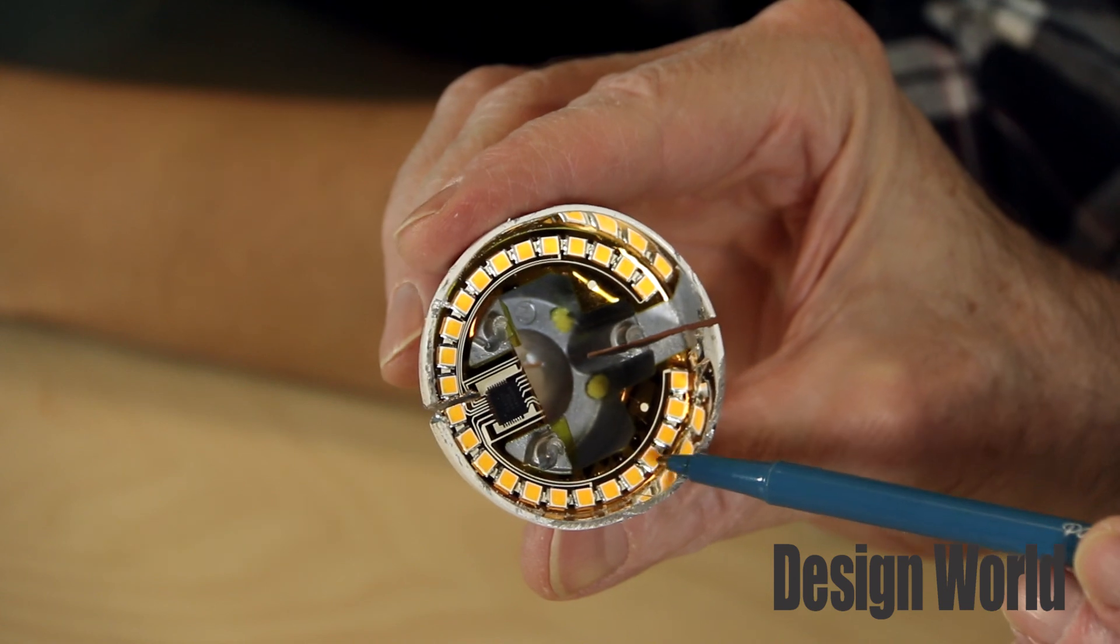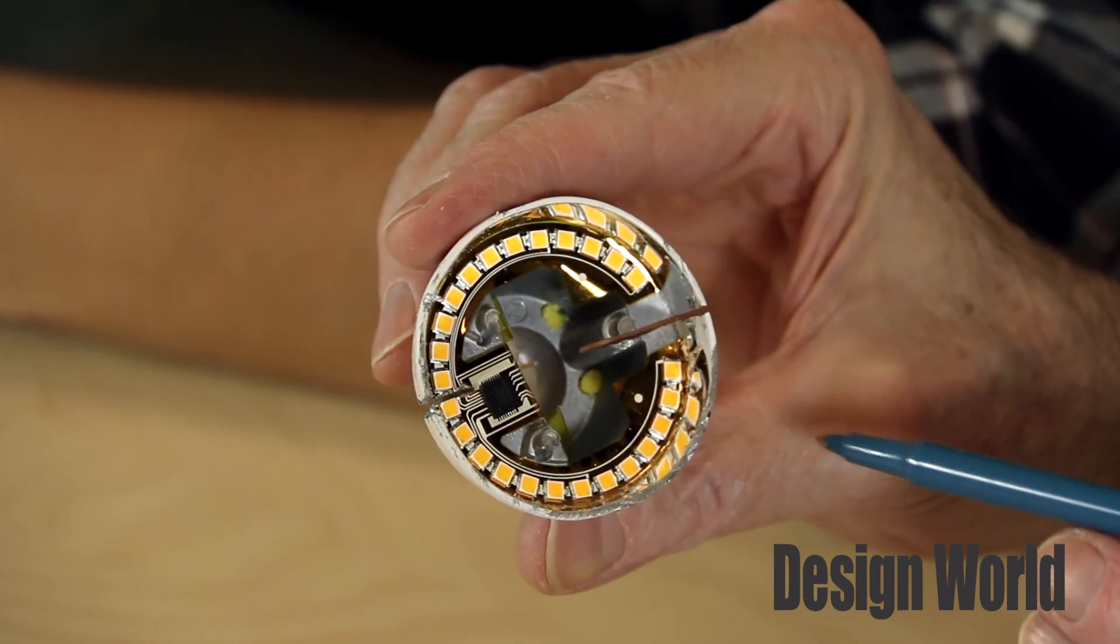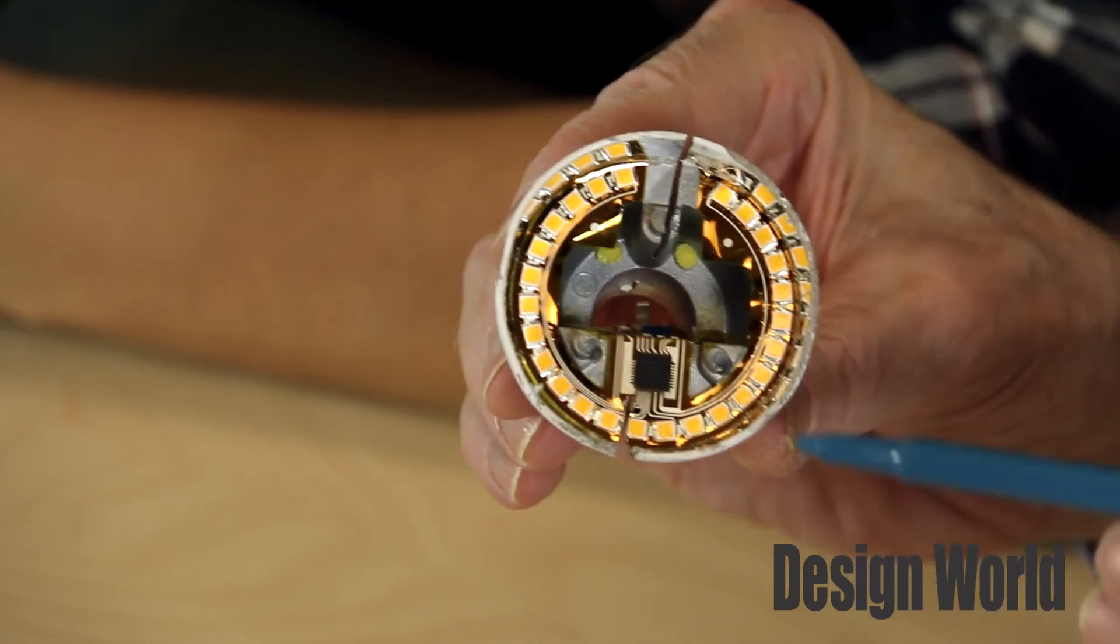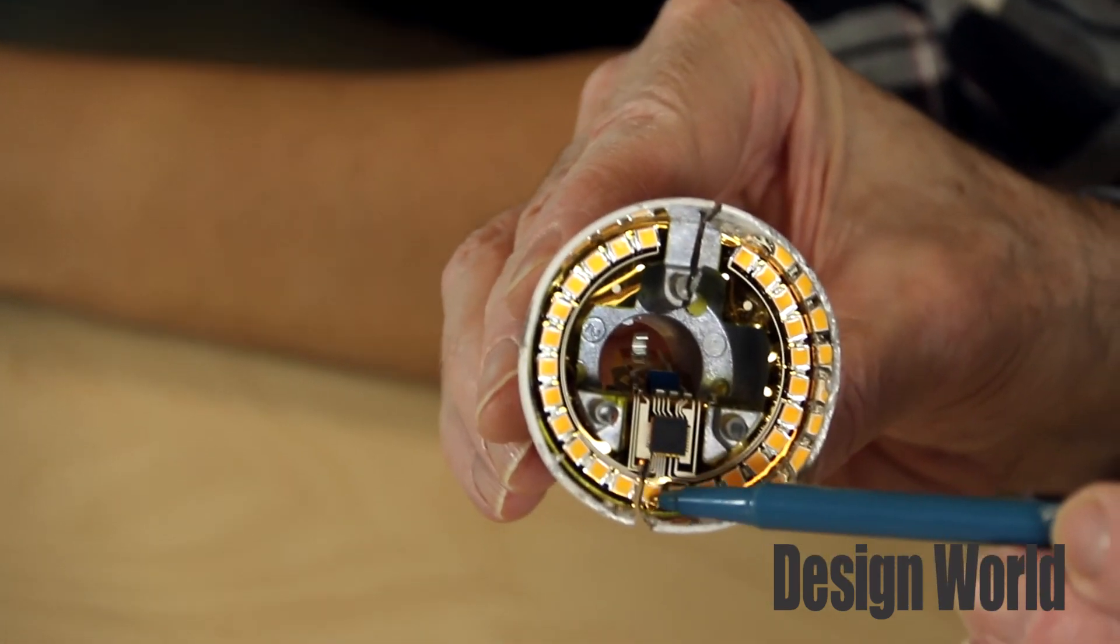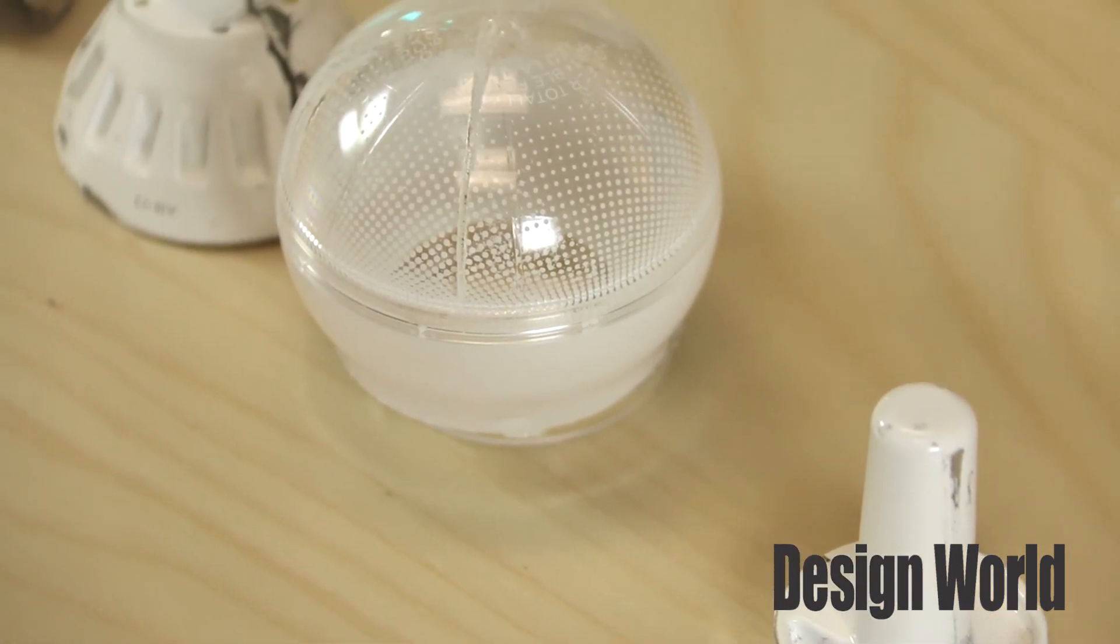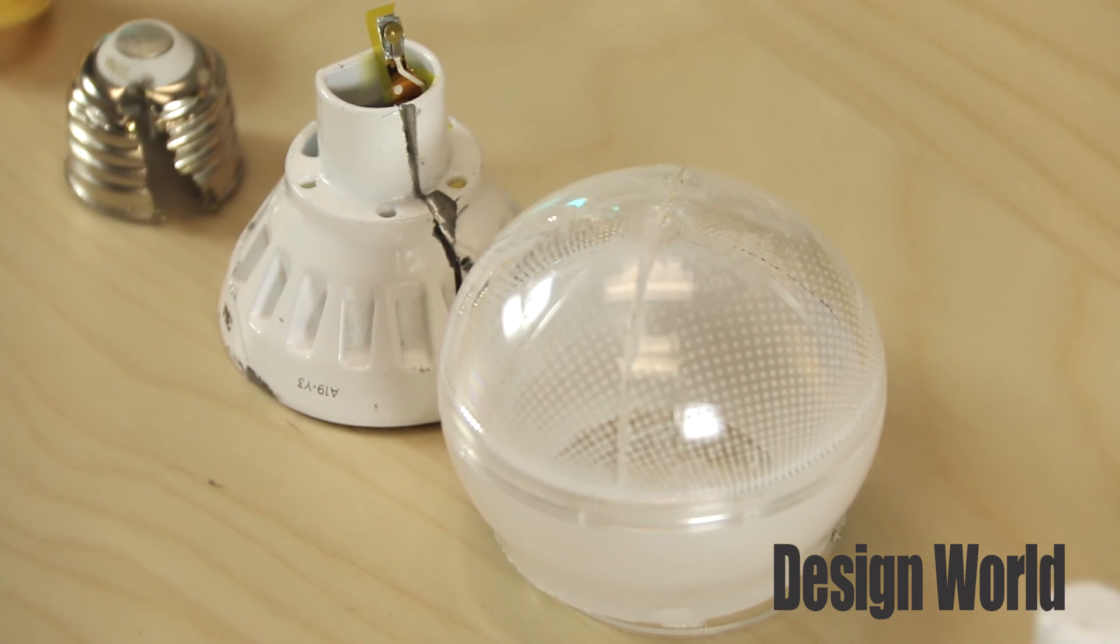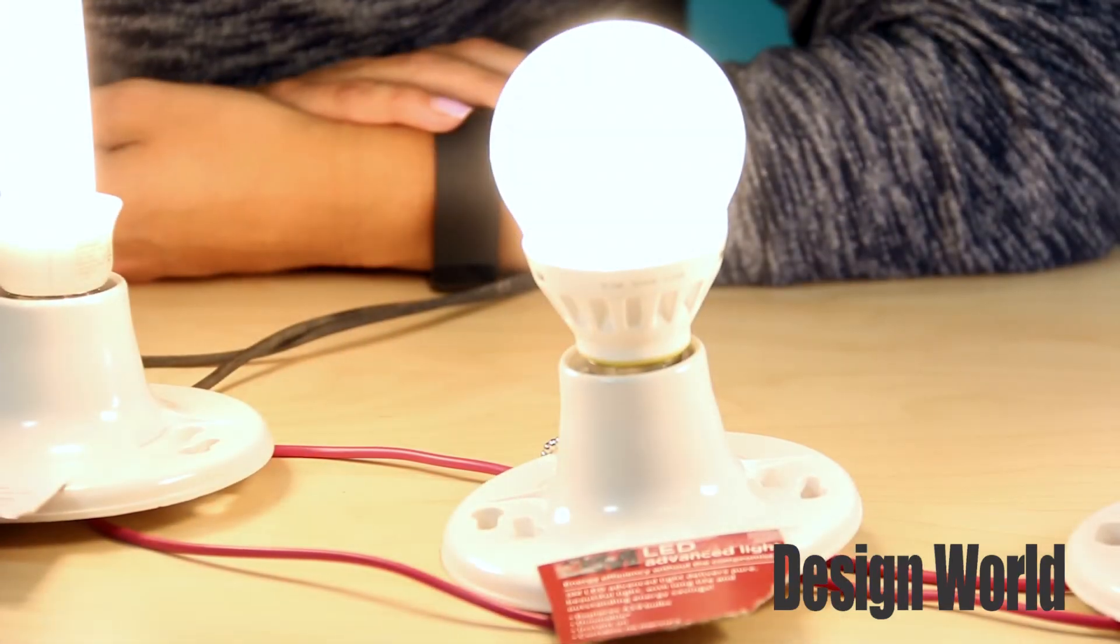One advantage of using a flex circuit is that the circuit material can bend. 3M certainly used that to good effect in this bulb. The 25 LEDs in this bulb mount directly to the flex circuit. The circuit material is bent over an edge on the heat sink to let the LEDs radiate up into the translucent bulb material, which serves as a way to distribute the light. So the LED light beams up into the plastic bulb rather than from inside it. Exactly.